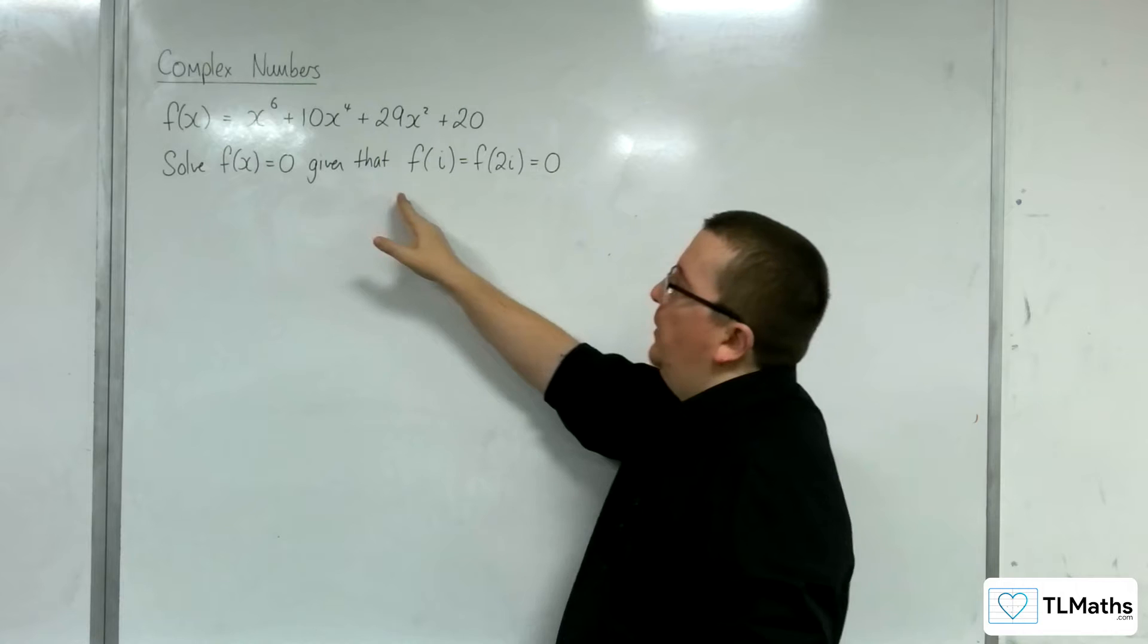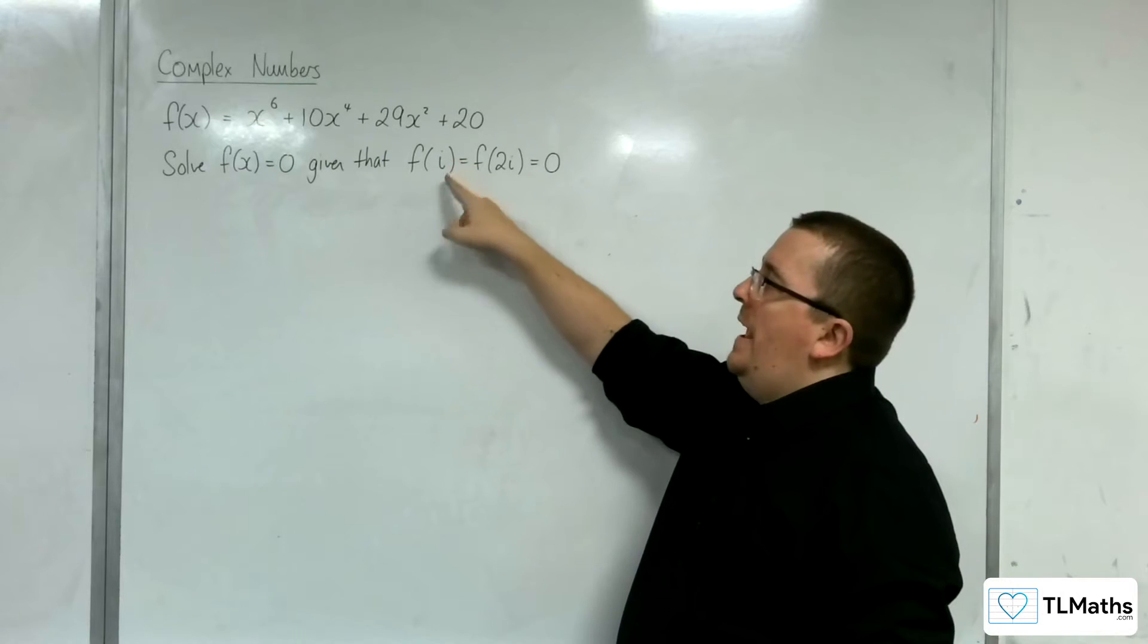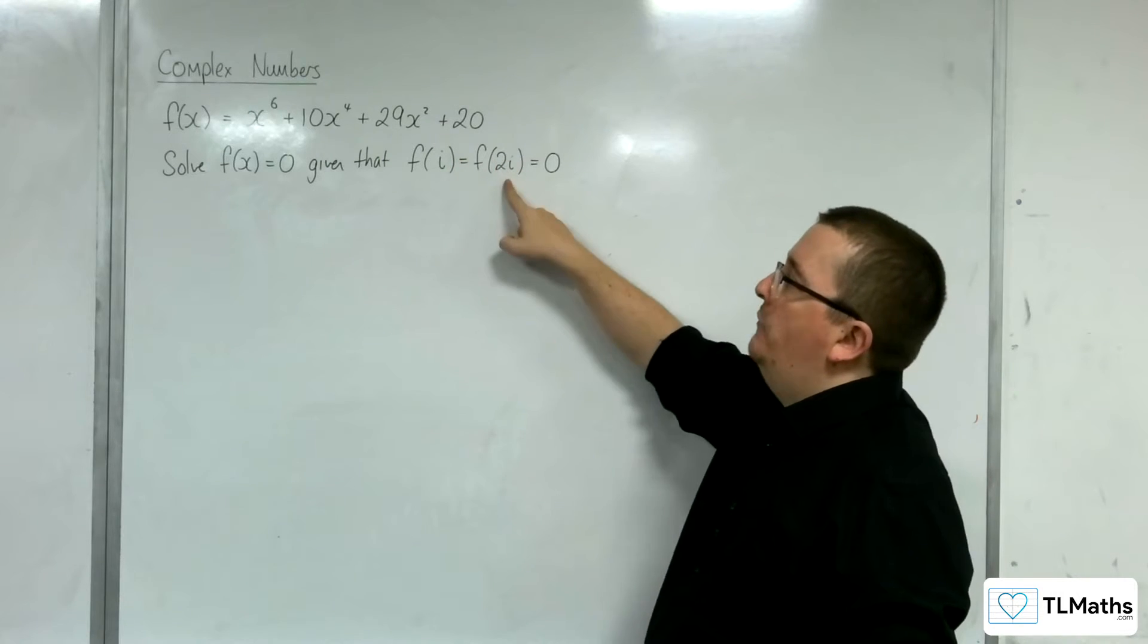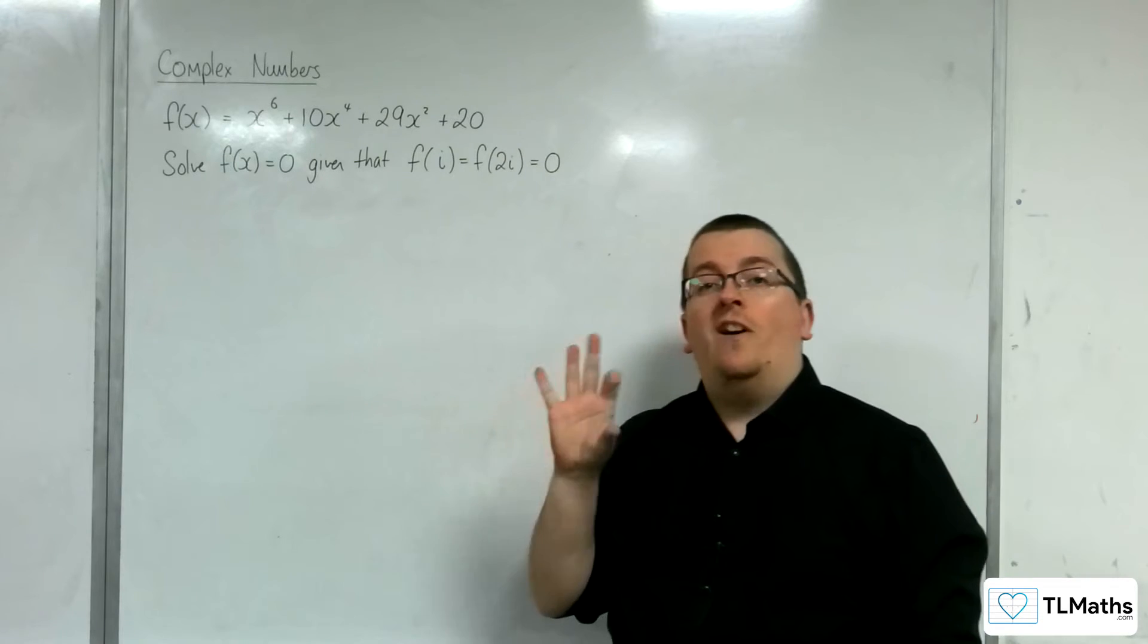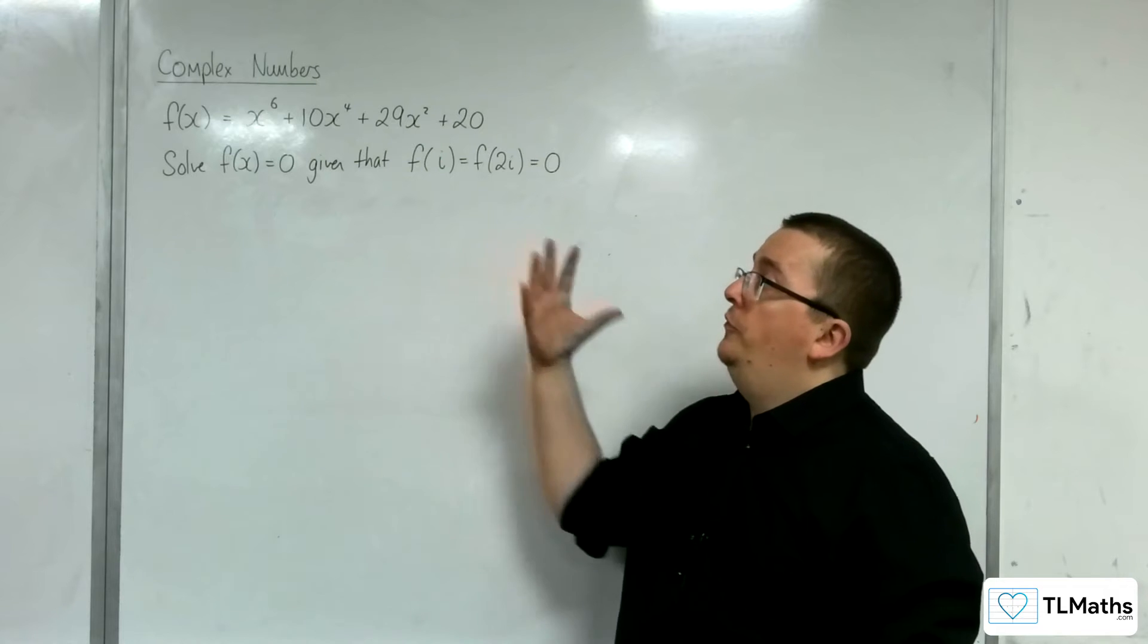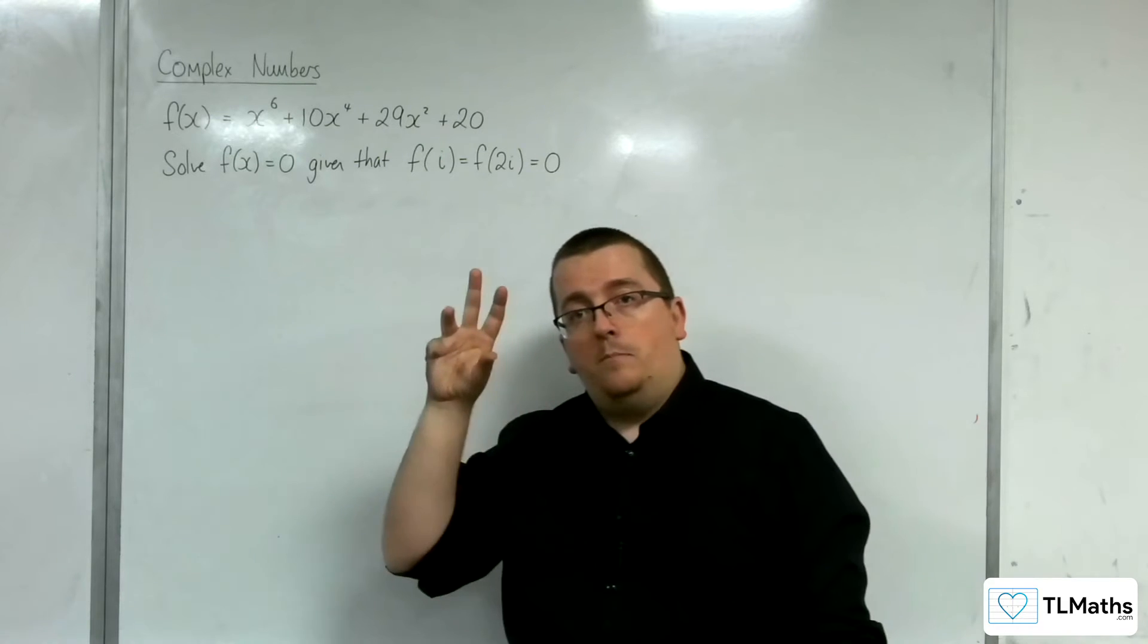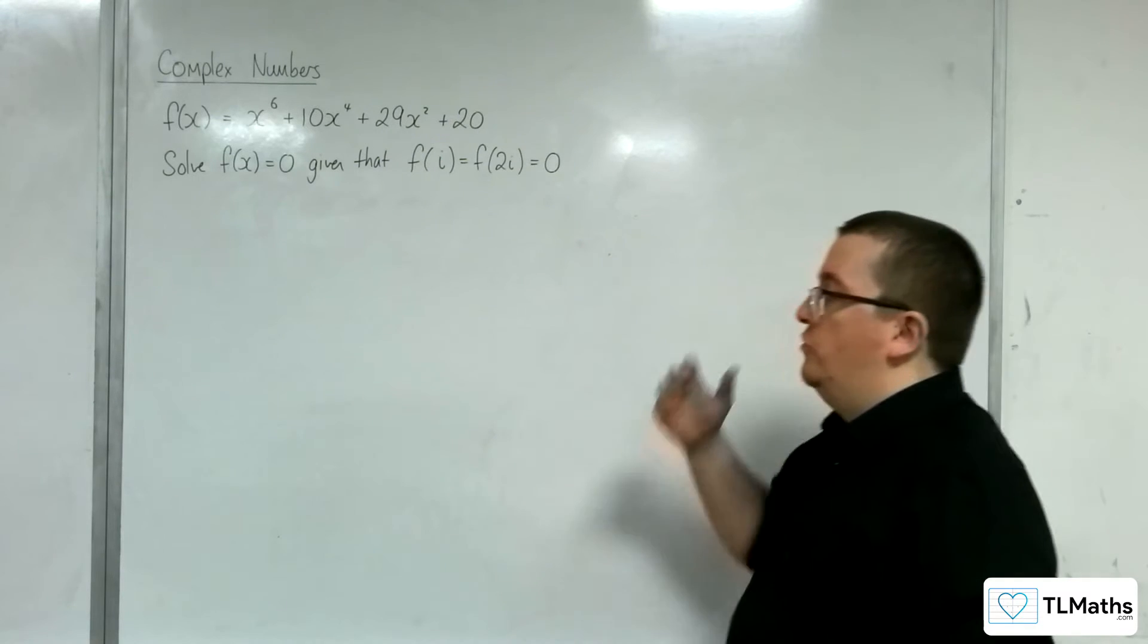And we've been told that f of i is equal to f of 2i, which is equal to 0. So we know that i and 2i are solutions, complex solutions, to the polynomial, to the equation rather.